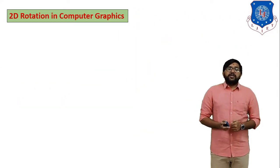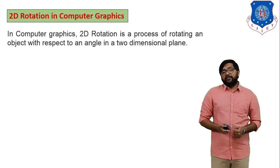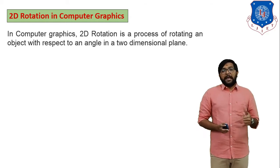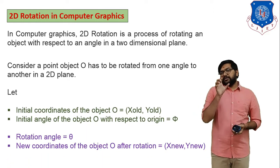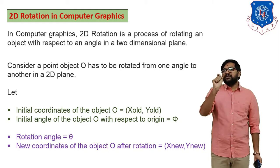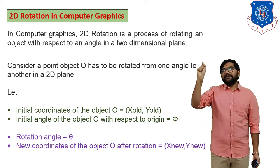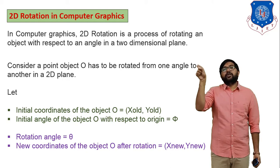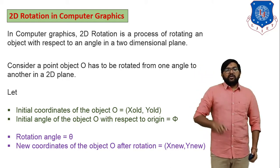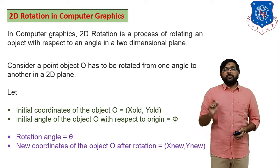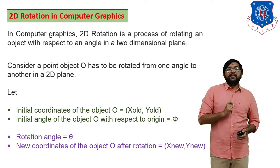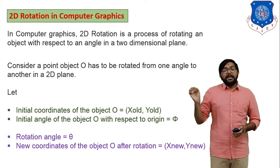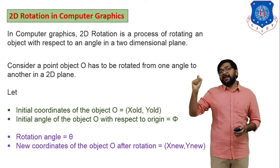What is rotational geometric transformation in computer graphics? It is the 2D process of rotating an object with respect to an angle in a two-dimensional plane. For the derivation, we consider one point O with coordinates (x_old, y_old). We give it an anti-clockwise direction rotation at angle theta. Consider a point O that has to be rotated from one angle to another in a 2D plane, with initial coordinates x_old, y_old and initial angle phi with respect to the origin.